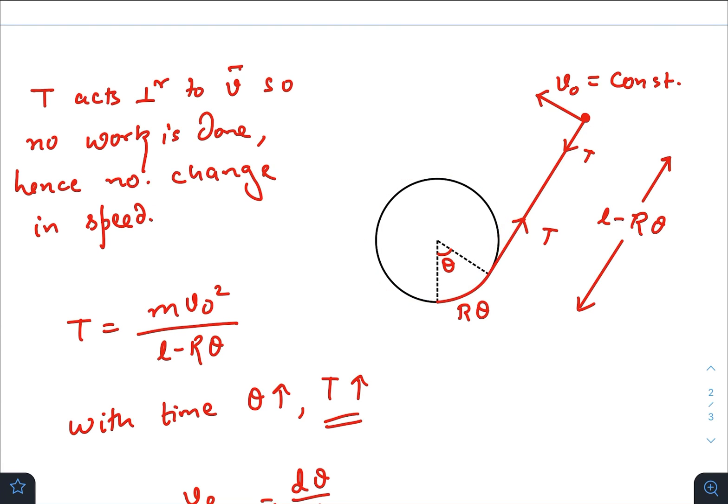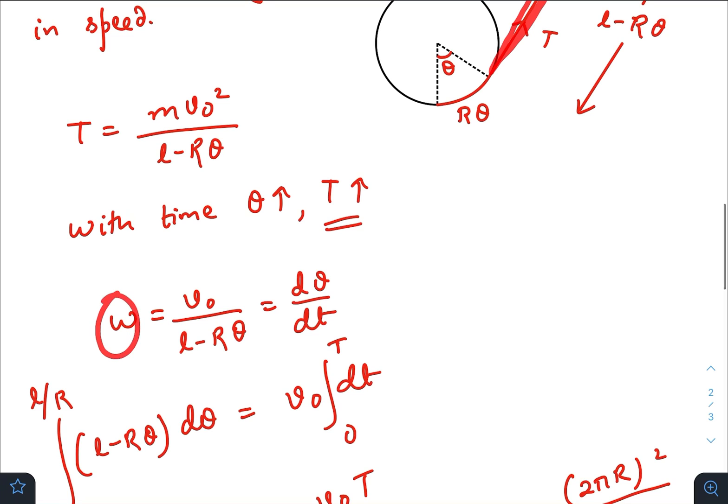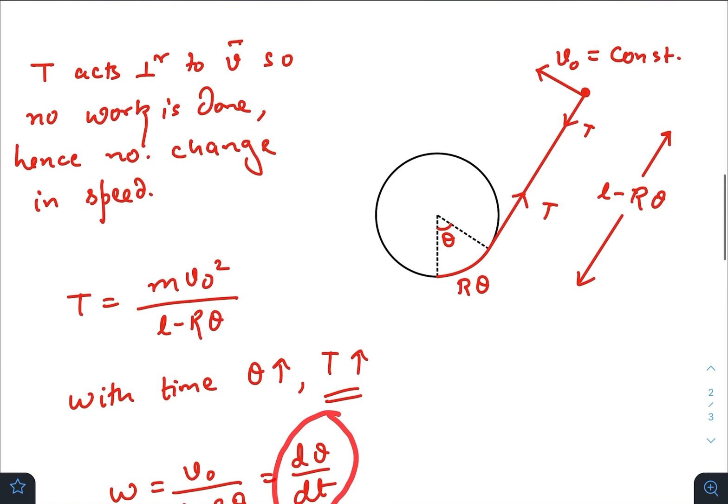At any instant, the angular velocity of this particle with respect to this point is v₀ divided by this length. So the angular velocity is v₀ divided by l minus Rθ, that is nothing but rate of change of theta, because a small wrapping over here would be a small change in angular displacement dθ.